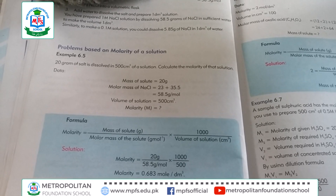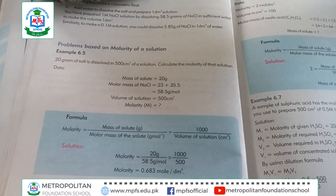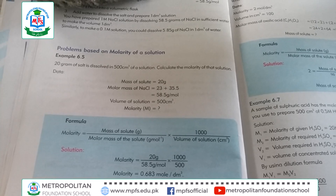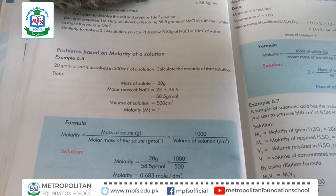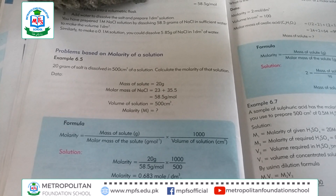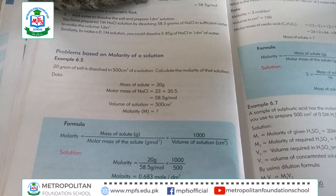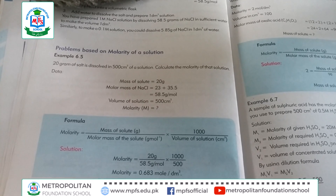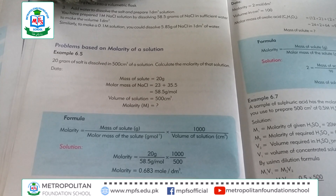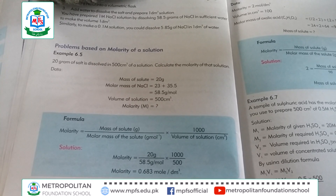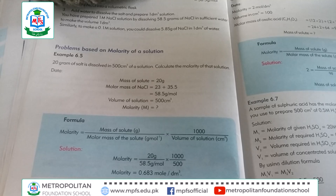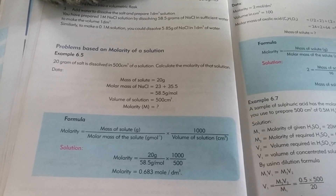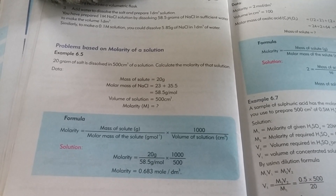Now we write the third value, which is the volume of solution mentioned in the given question. The volume of solution is 500 cm³. We write in the data that the volume of solution is equal to 500 cm³.